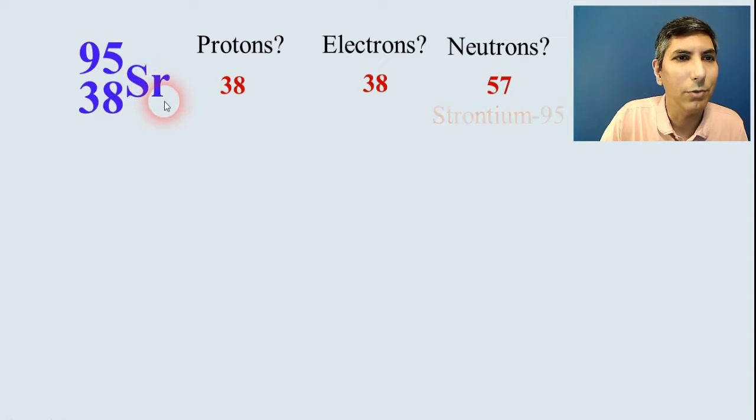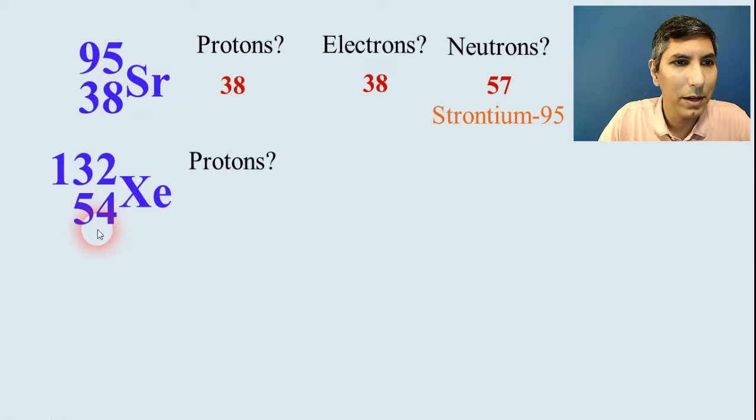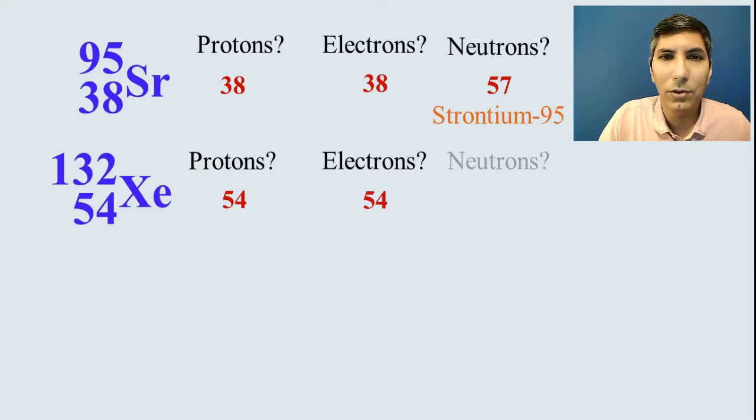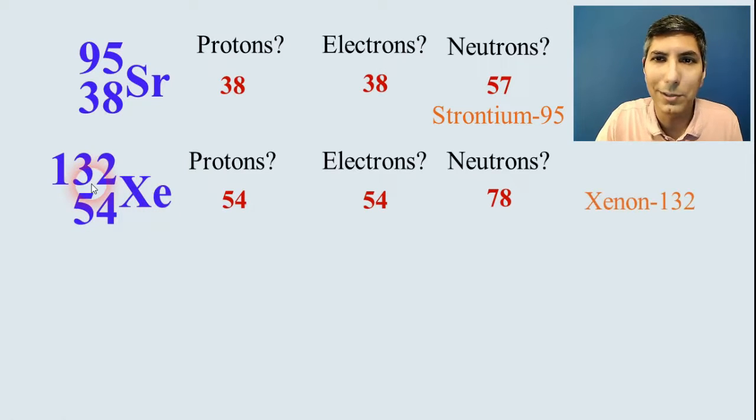We would call this isotope strontium-95 using the mass number to identify the isotope. Let's try this symbol right here. Once again, protons, number on the bottom, it's 54. And then it's also 54 electrons. And to find neutrons, we have to subtract, don't we? So 132 minus 54 gets us the 78 neutrons. We'd call this xenon-132. That's the name of the isotope.